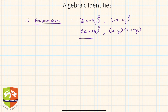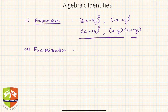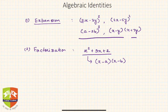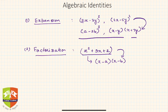The second thing we will learn is factorization — exactly the reverse process. For example, if there is an expression like x² plus 3x plus 2, which is a polynomial, how to factorize it — that means how to convert it into the form (x minus a)(x minus b). So one is converting factors back into expressions, and the other is expressing a given expression as a product of factors.